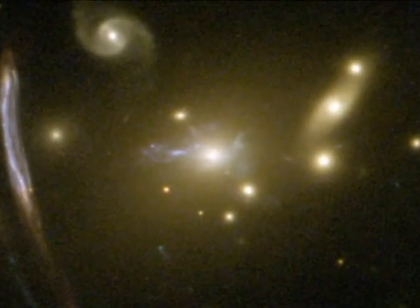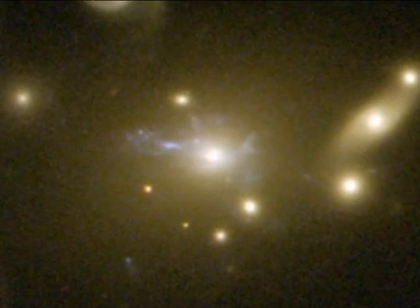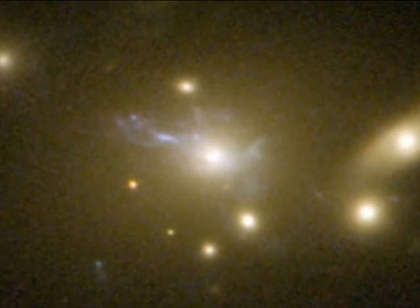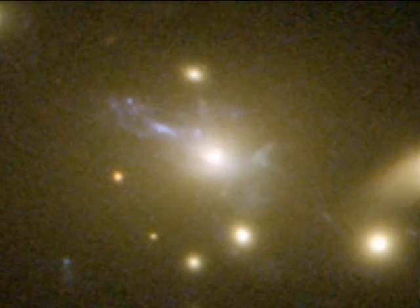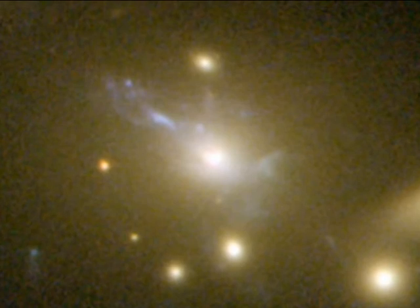At the cluster's centre, another rare feature can be seen. The vivid blue light from millions of stars created in a so-called cooling flow. Some of the hot cluster gas is cooling in a filamentary structure as it falls into the cluster's core, setting off the birth of lots of bright blue stars outshining their environment.